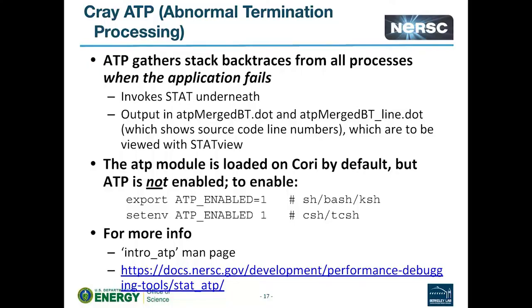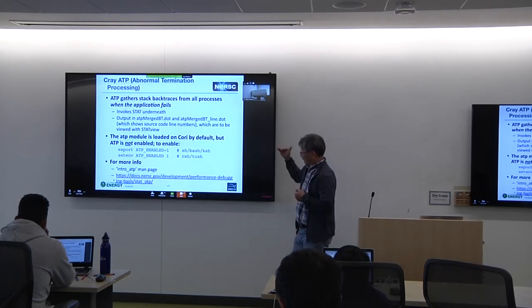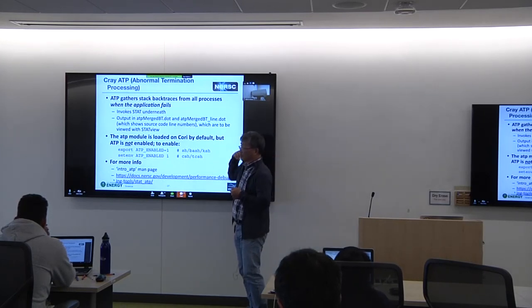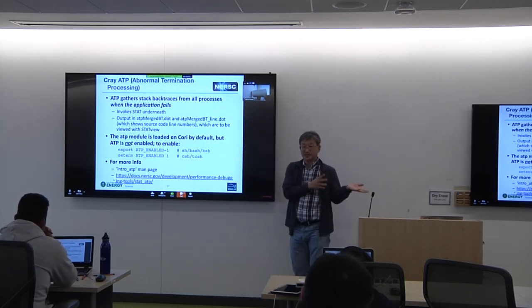Another last tool that I want to mention is the ATP, Abnormal Termination Processing. This is a Cray tool, which uses STAT as I mentioned in the beginning. So this one calls STAT only when the program fails. When the program fails, it calls STAT to get that kind of data so that we can display this kind of thing here. So it involves that underneath, and then it generates the output ATP merge BT dot dot or ATP merge BT underscore line dot dot. At the end, then at that point, when you load the STAT module, you display this result, you'll see something like that.